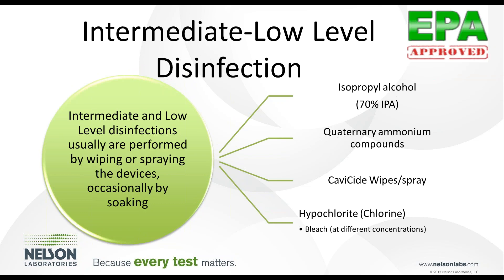Intermediate and low level disinfection are typically done using the same chemicals. The main difference is the additional mycobacterium organism requirement for intermediate level versus just the four vegetative organisms for low level. The EPA governs low and intermediate level disinfectants in the U.S. Examples include isopropyl alcohol, quaternary ammonium compounds, Cavicide, chlorine, and bleach solutions.